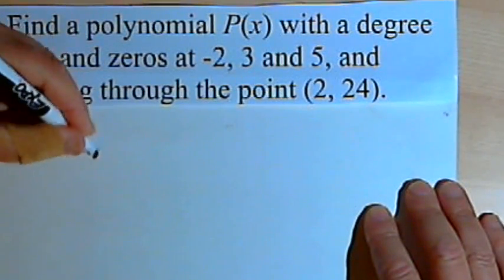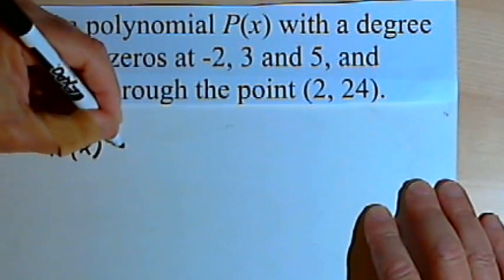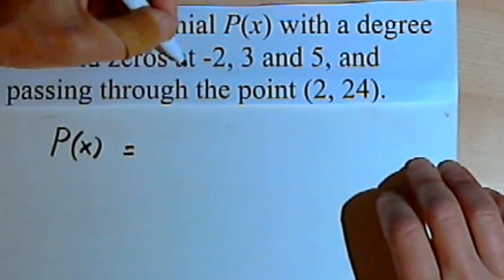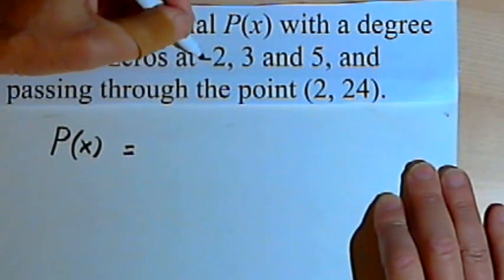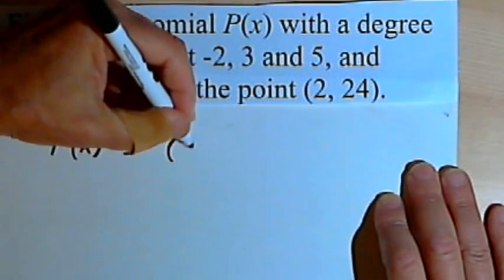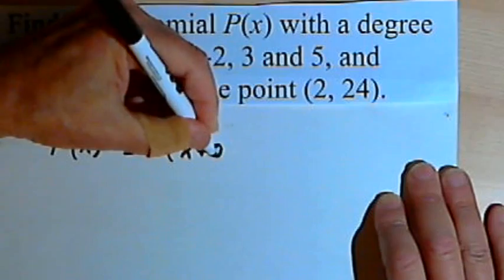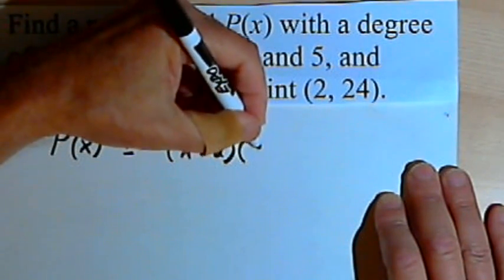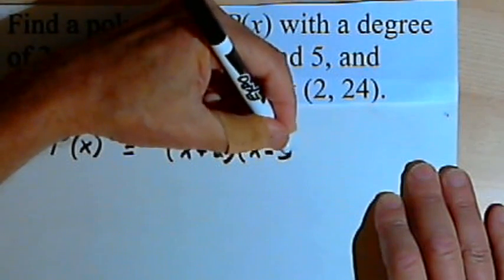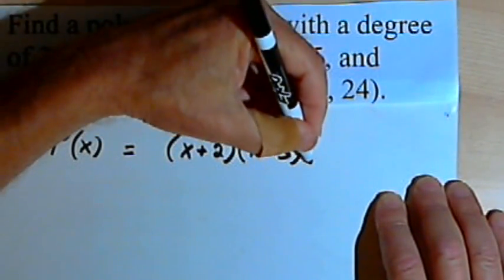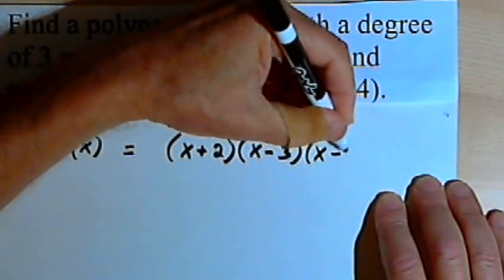So we want to find P equals... I've got a zero at negative 2. A zero at negative 2 means that one of the factors of the polynomial is x plus 2. There's a zero at 3, so there's another factor which is x minus 3. And there's a zero at 5, so the third factor is x minus 5.